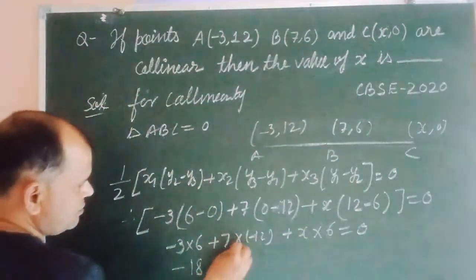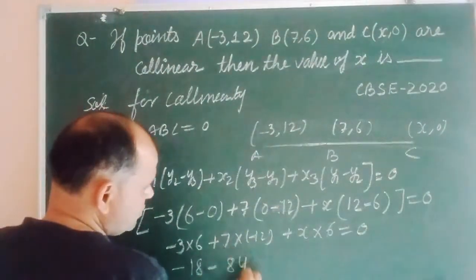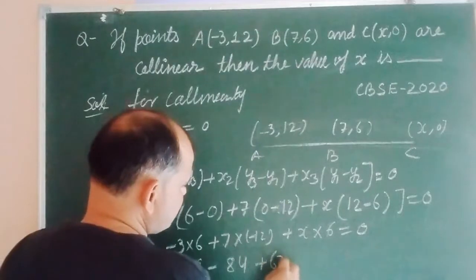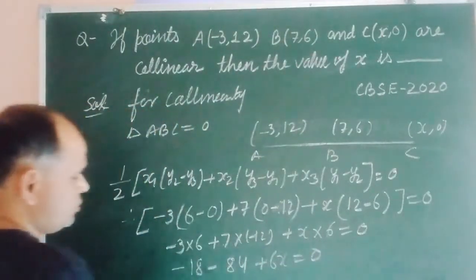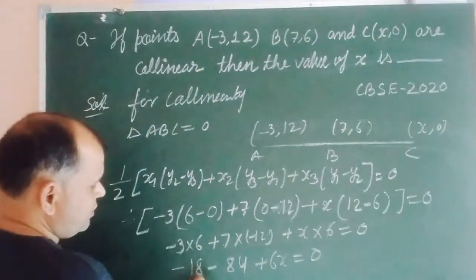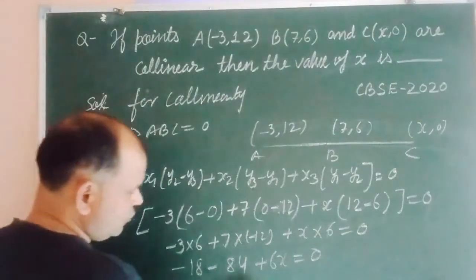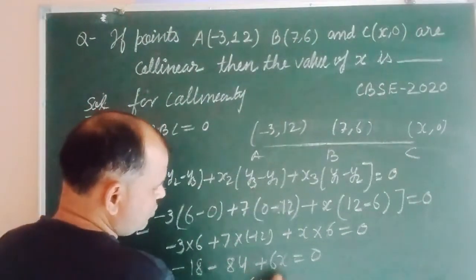So 3 times 6 is 18, 7 times 12 is 84, minus 18 minus 84 plus 6x equal to 0. So this is minus 102 plus 6x equal to 0.